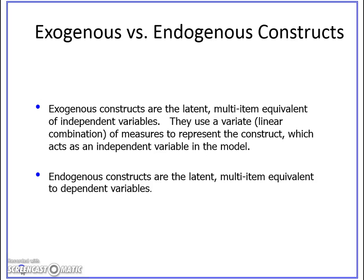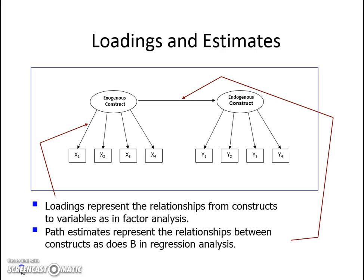Coming to the exogenous and endogenous constructs: exogenous constructs are the latent multi-item equivalent of independent variables. You can see the loadings and the estimates representation here. Exogenous constructs are typically independent variables, whereas endogenous constructs are those to which a directed arrow comes in.